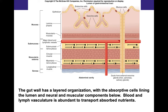The next layer is the circular and longitudinal muscle, which houses the myenteric nerve plexus. When we talk about peristalsis and motility in the gut, I want you to focus on the muscularis externa layer. The serosal layer faces the outside — the peritoneum. The gut wall has a layered organization with absorptive cells lining the lumen and neural and muscular components below. Blood and lymph are abundant to transport absorbed nutrients.